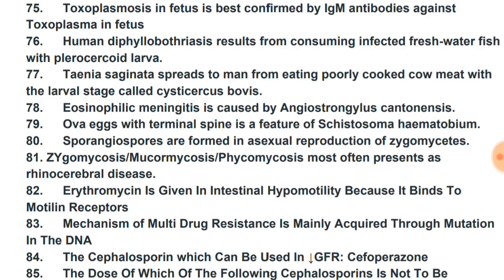Human diphyllobothriasis results from consuming infected fresh water fish containing plerocercoid larvae. Taenia saginata spreads to humans from eating poorly cooked cow meat containing the larval stage called Cysticercus bovis.